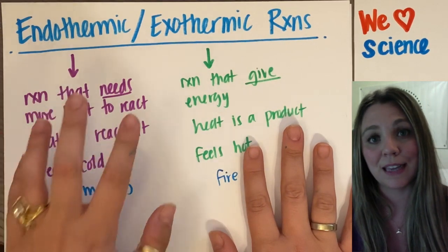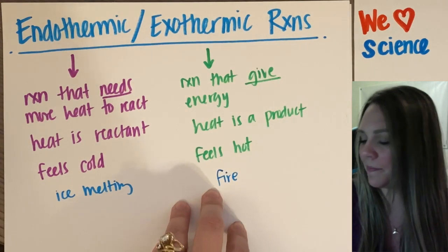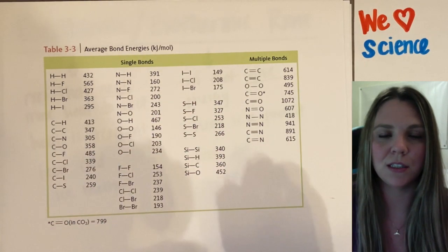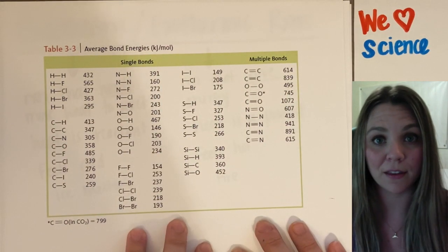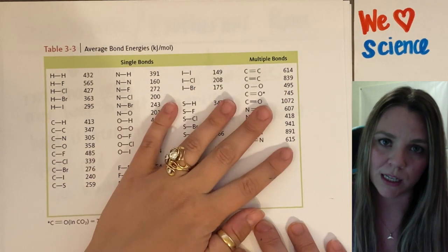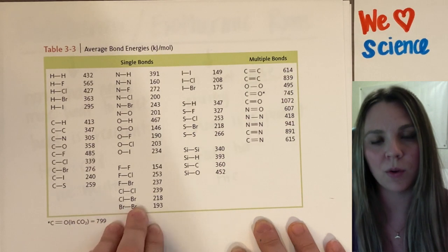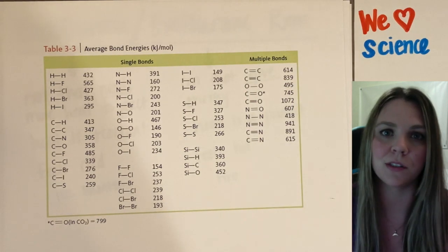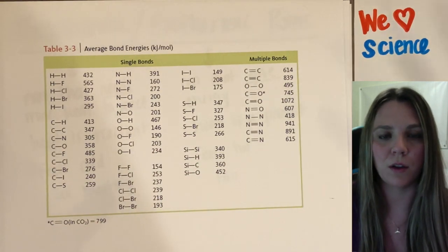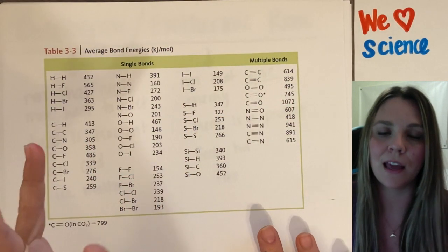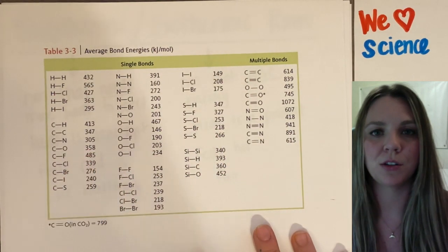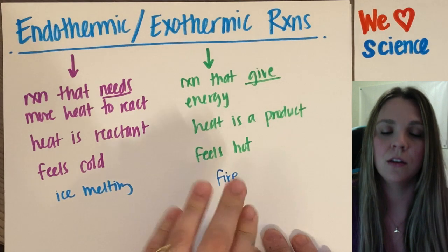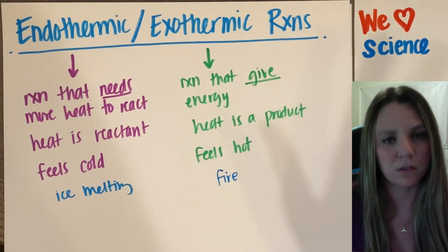What actually makes a chemical reaction endothermic versus exothermic gets into something called bond energies. Different bonds have a different amount of energy to break and remake them, and there's math to do with this. This is beyond where we're getting in Chem 2A, but you can actually calculate exactly how much heat is given off by a specific combustion reaction — like burning propane versus methane. Just know that's out there.